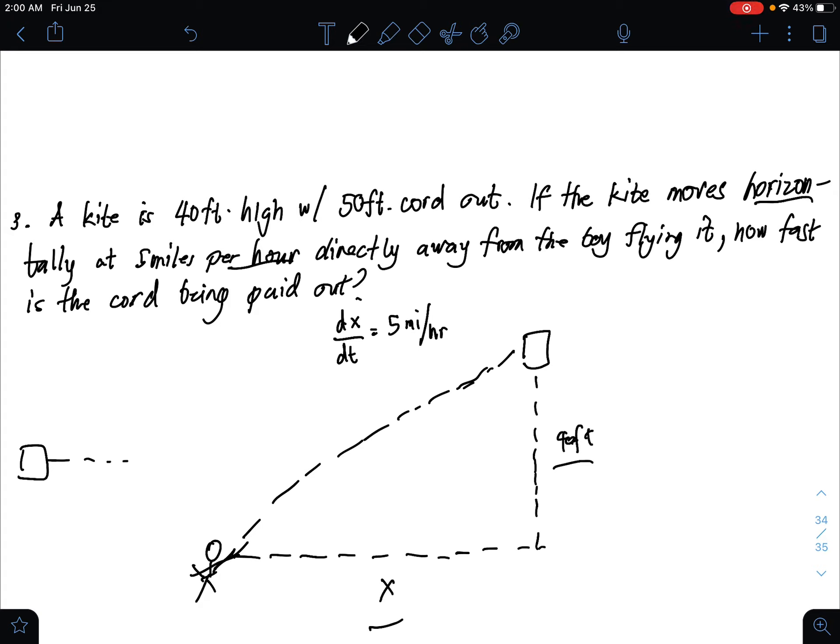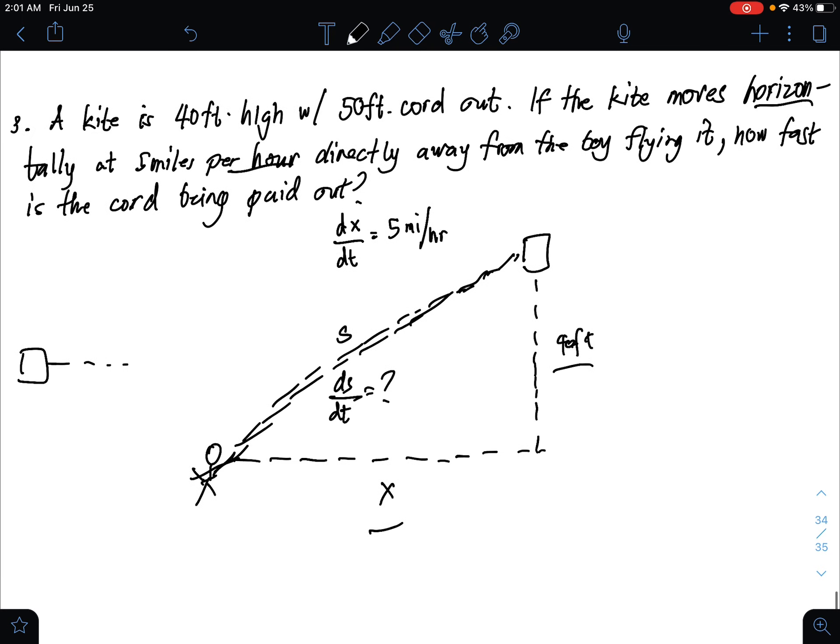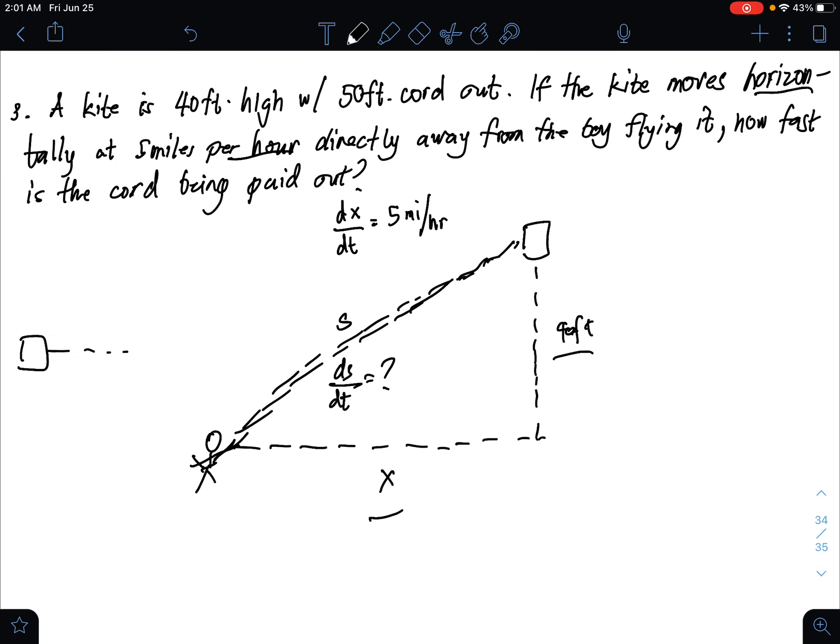How fast is the chord being paid out? How fast does the string rise? The string going with the kite. How fast? What we're looking for is S, we're looking for dS over dt. How fast is the chord or the string going up with the kite?